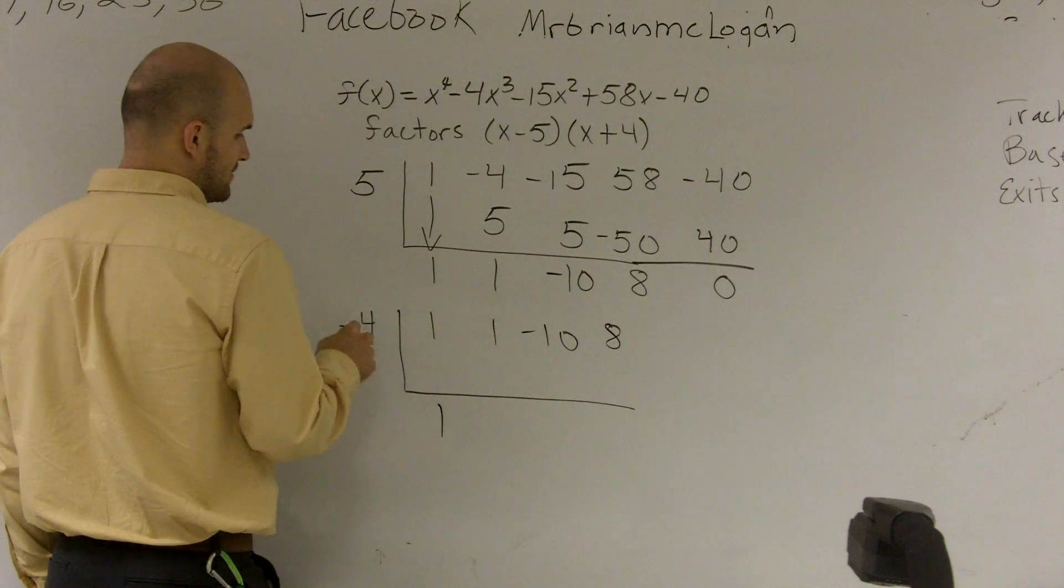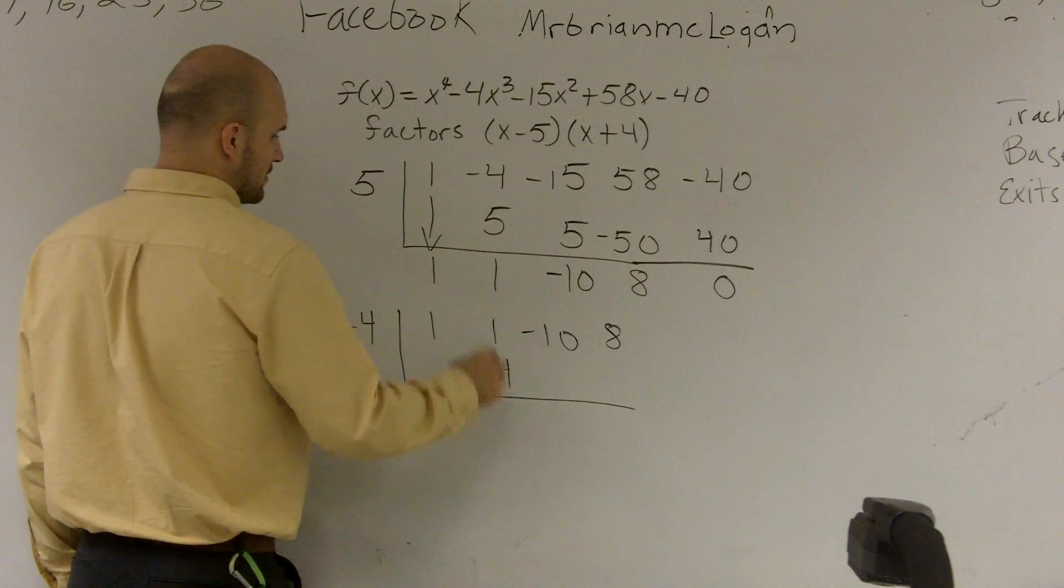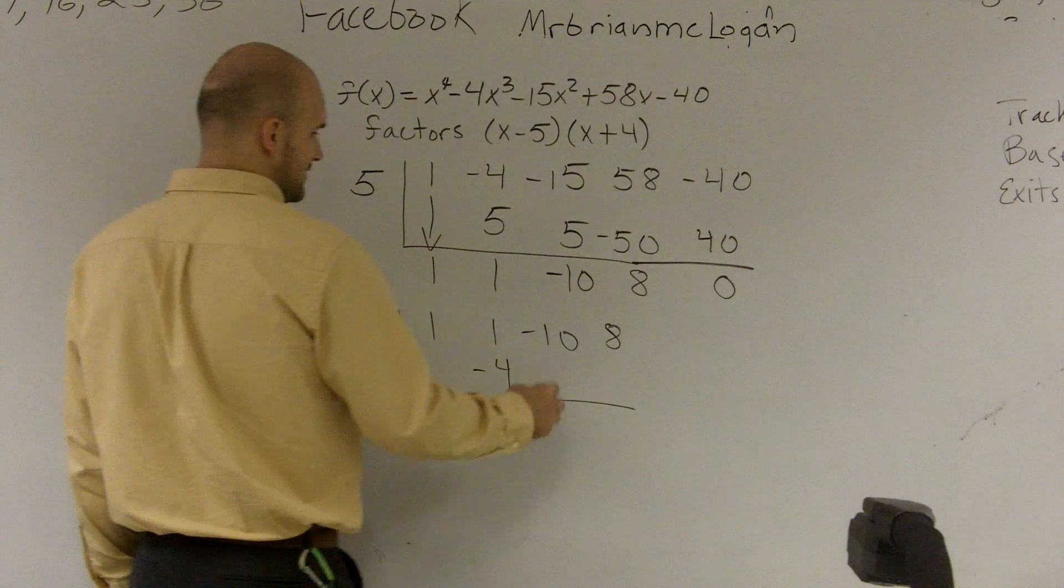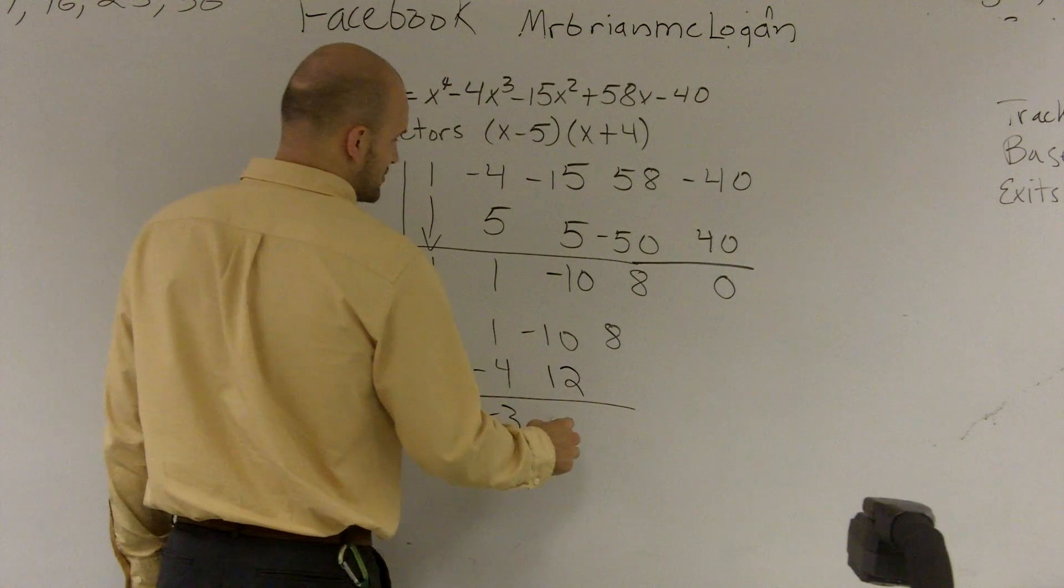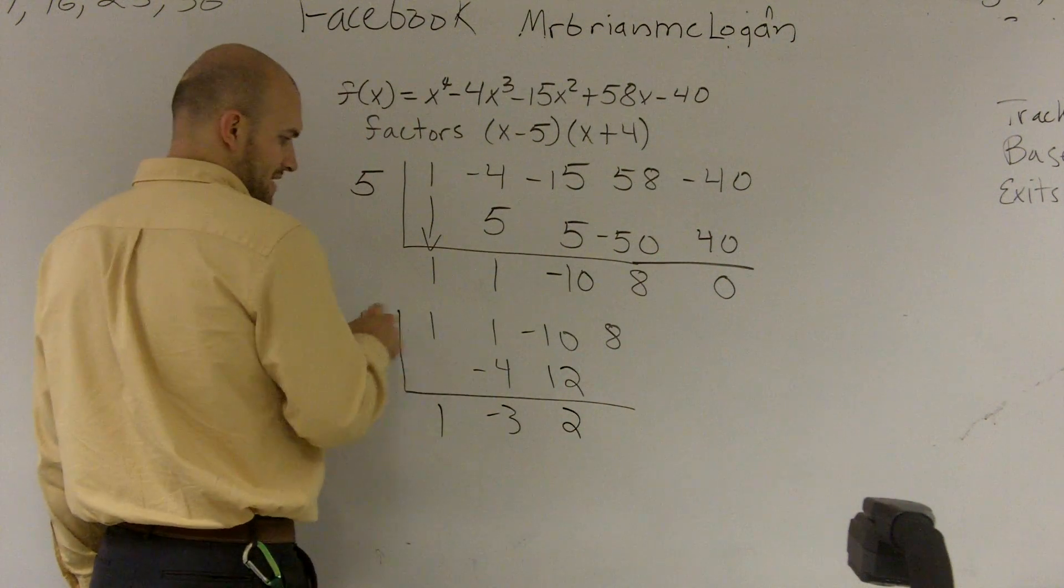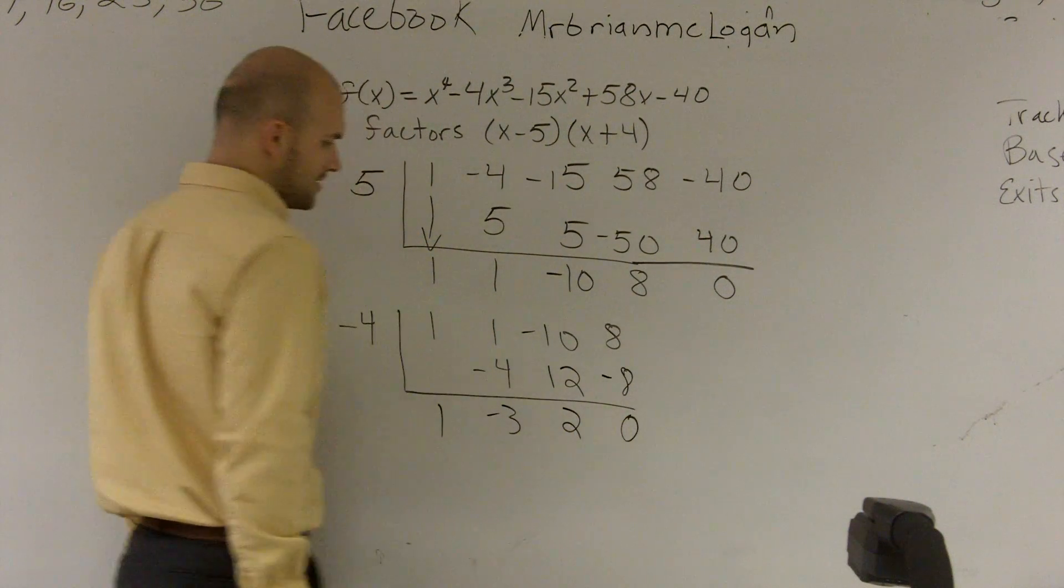1 drops down to 1. Negative 4 times 1 is negative 4, gives me a negative 3. Negative 4 times negative 3 is a positive 12, which gives me a positive 2. Negative 4 times 2 is a negative 8. Therefore, I get 0.